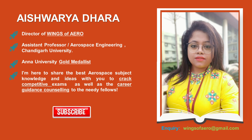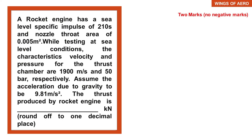Let's come back to today's topic. Here is the question: A rocket engine has a sea level specific impulse of 210 seconds and a nozzle throat area of 0.005 square meters. While testing at sea level conditions, the characteristic velocity and the chamber pressure are 1900 meters per second and 50 bar respectively. Assume acceleration due to gravity to be 9.81 meters per second squared. Find the thrust produced by the rocket engine in kilo-Newtons, rounded off to one decimal place. This question carries two marks with no negative marking for Gate 2020.